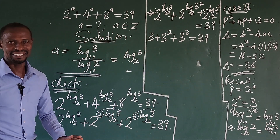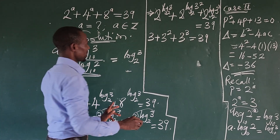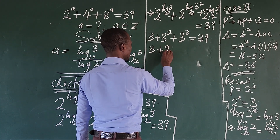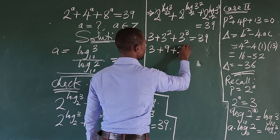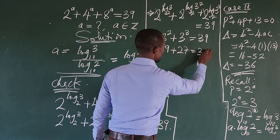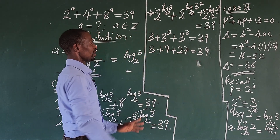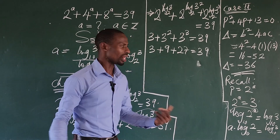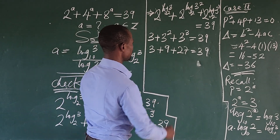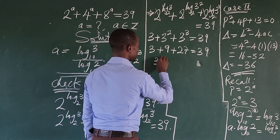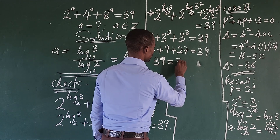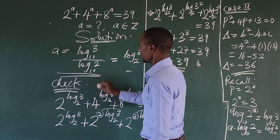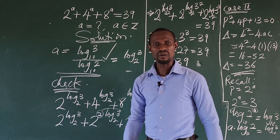Wow — easy! So we have 3 plus 3 squared which gives us 9, then 3 cubed which gives us 27, equal to 39. So 3 plus 9 gives us 12, and 12 plus 27 gives us 39, which equals 39. This shows that our answer satisfies the original equation.